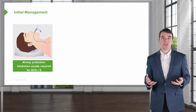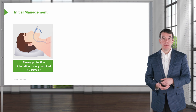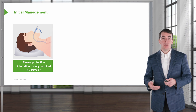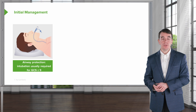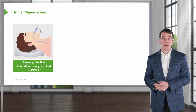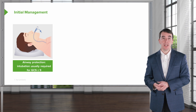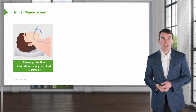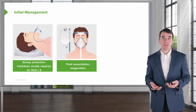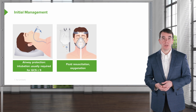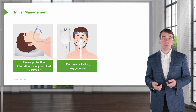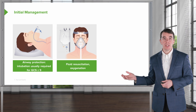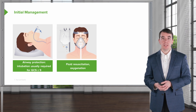So what about the initial management? How do we manage these patients? Brain injuries are an emergency, and whenever we're dealing with an emergency, we think about airway protection — intubating those who may not be able to protect their airway, particularly those with a GCS of 9 or less. Fluid resuscitation and oxygenation are important. We want to reduce biochemical stress to the brain, and these resuscitative and supportive care measures are critical for doing that.